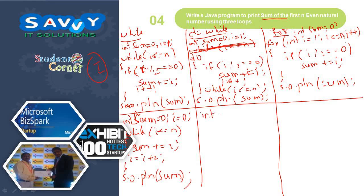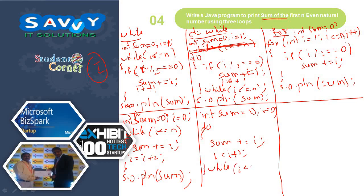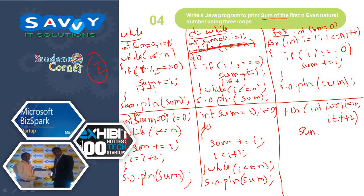Similarly: int sum is equal to 0 and i is equal to 0, do — sum plus equals i, i is equal to i plus 2 — while i less than or equal to n — System.out.println sum. Similarly the for loop: for int i is equal to 0 to i less than or equal to n, i is equal to i plus 2 — sum plus equals i — System.out.println sum. This is how it will be working.